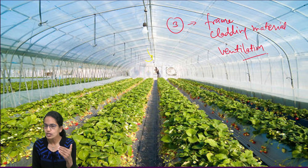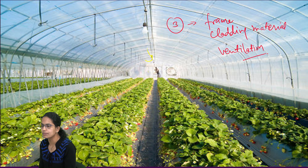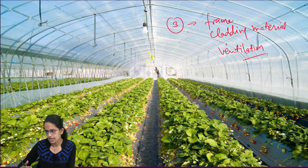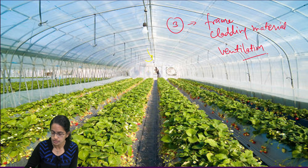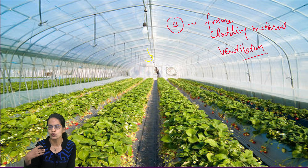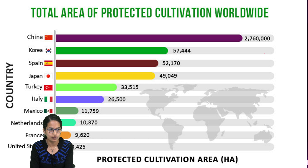All these factors are controlled, and then you have controlled ventilation. The structure itself is important, and the cladding material used understands the load. What kind of air circulation is required, how much light is required, how much water is required, how much ventilation or heat is required — everything is controlled in this phenomenon.